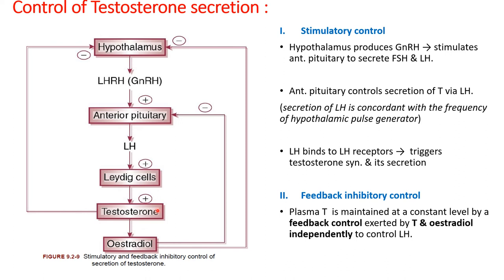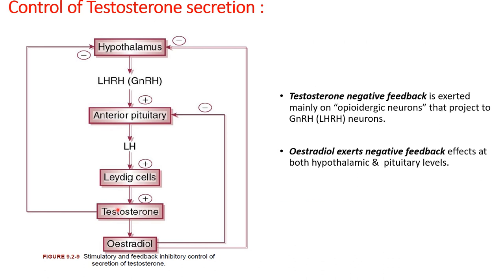Under negative feedback control, plasma testosterone levels are maintained at a constant level. Testosterone exerts its negative feedback effects mainly on opioidergic neurons in the hypothalamus, while estradiol exerts its negative feedback effect on the anterior pituitary and the hypothalamus. The net effect is that whenever there is an increase in plasma testosterone, it negatively stimulates the hypothalamus to secrete less GnRH, and thus less testosterone is produced. This completes the male reproductive system. In the next lecture, I will start the female reproductive system. Thank you.